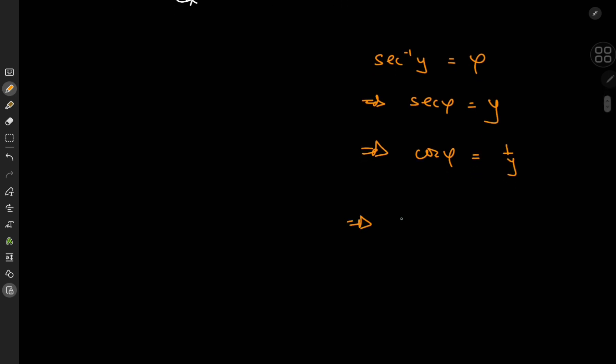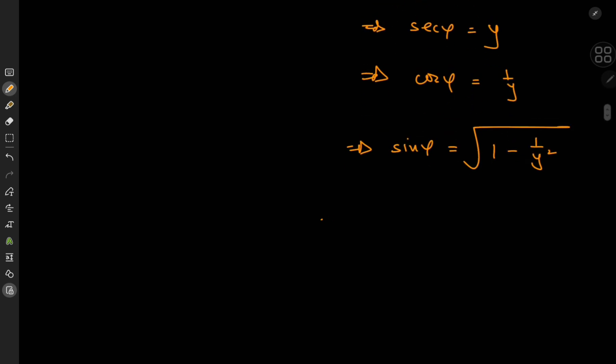Now that we have the cosine, we can work our way towards the sine as the square root of 1 minus the squared cosine, which is 1 by y squared in this case. So that means we have the sine of phi, phi being the inverse secant of y, equal to the square root of y squared minus 1 by y.